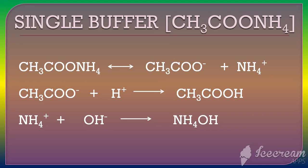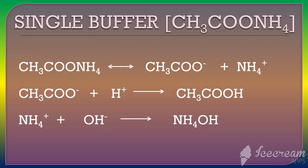In solution, ammonium acetate gives acetate ions (CH3COO-) and ammonium ions (NH4+). When you add a small amount of acid — that is, H+ ions — the acetate ions combine with H+ to form acetic acid. Acetic acid is a weak acid and is very feebly dissociable, so the H+ ion concentration does not change significantly and the pH remains unchanged. When OH- ions are added, NH4+ combines with OH- to form NH4OH, which is a weak base and also weakly dissociable. So the OH- ion concentration does not change appreciably. This is how ammonium acetate acts as a single-compound buffer solution whose pH is practically unchanged.